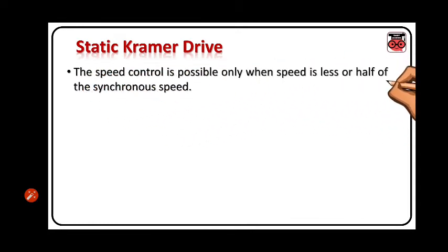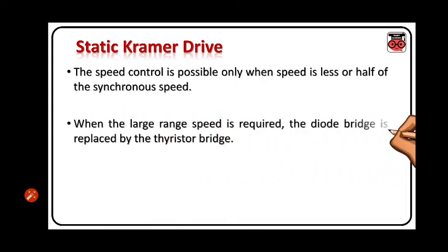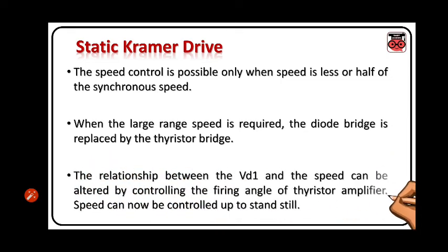The speed control is possible only when speed is less than or half of the synchronous speed. When a large range of speed is required, the diode bridge is replaced by the thyristor bridge. The relationship between Vd1 and the speed can be altered by controlling the firing angle of the thyristor amplifier. Speed can now be controlled up to standstill.